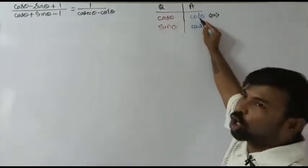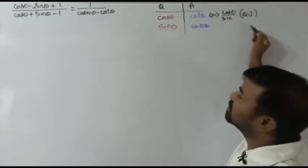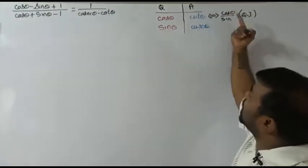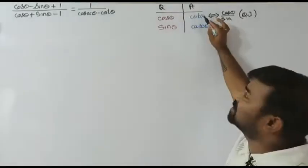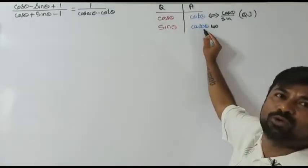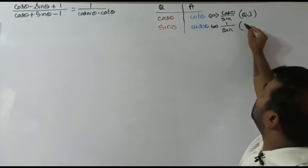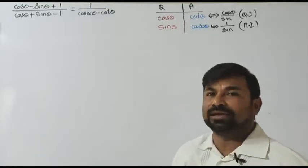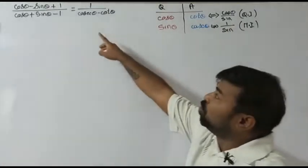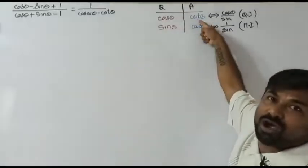We use certain identities. Cot is nothing but cos θ / sin θ — that's the quotient identity. So if we divide cos by sin, we can reach cot. In the same way, cosecant is nothing but 1 / sin θ — that's the reciprocal identity. We need cosecant from sin, and we already have 1 in the question, so 1 / sin gives us cosecant.